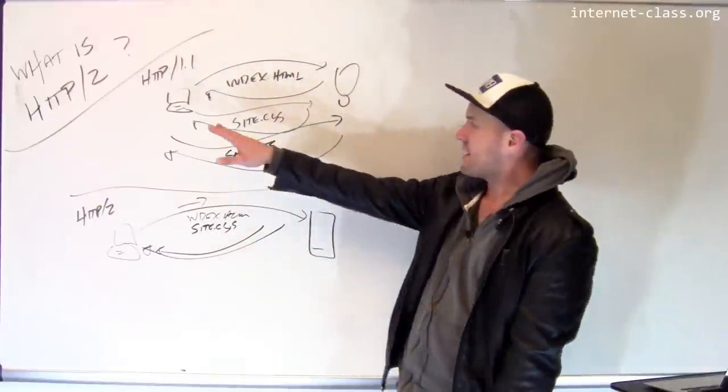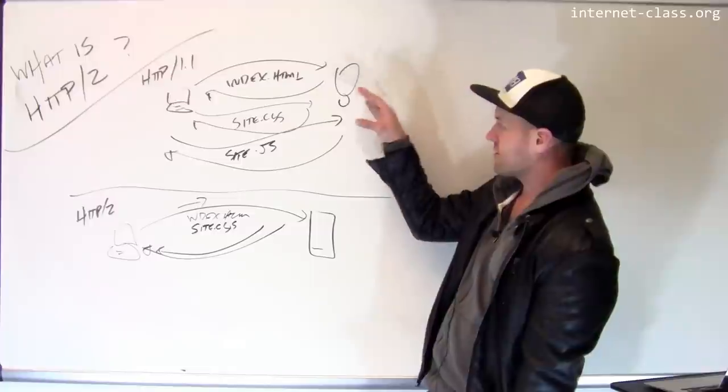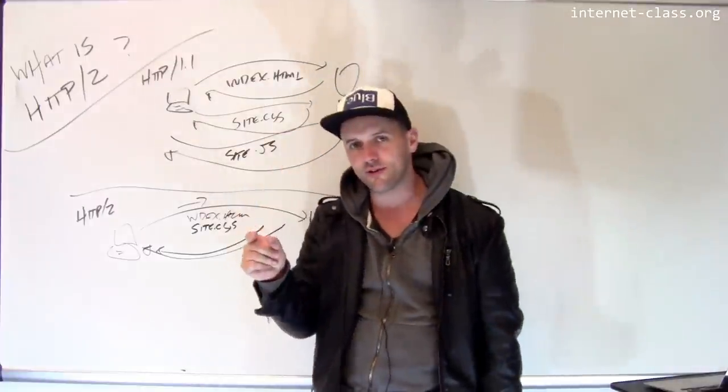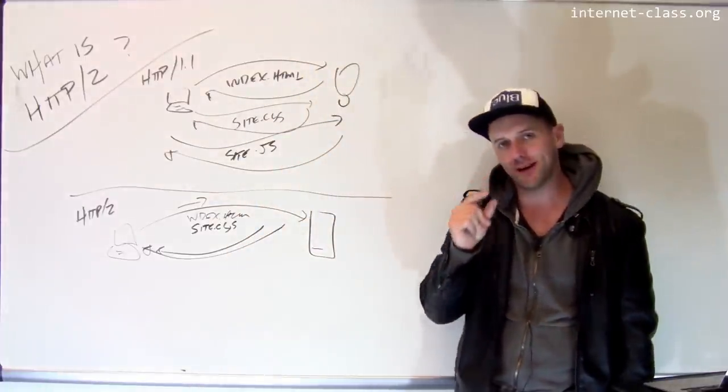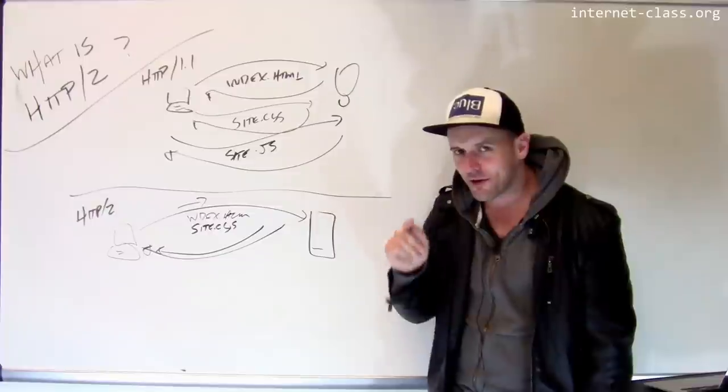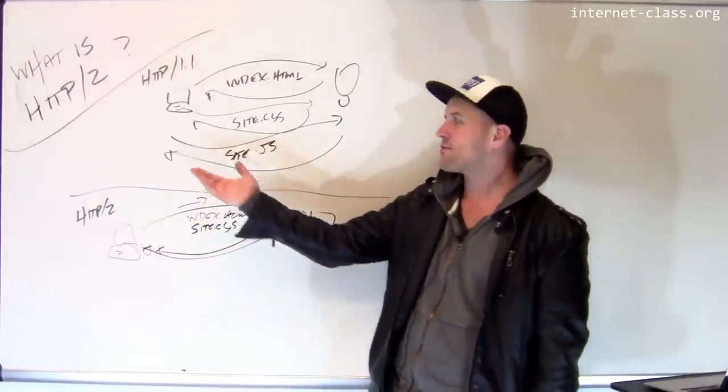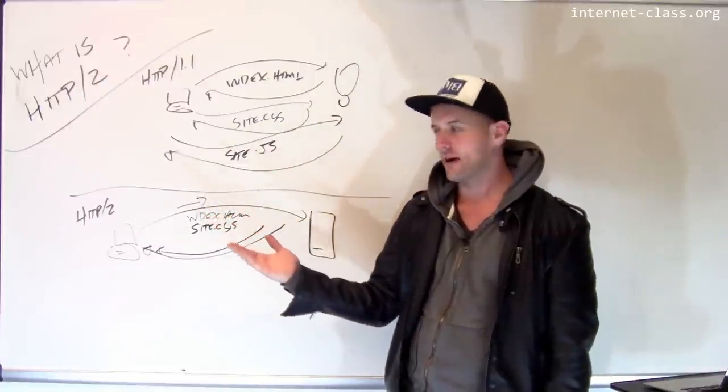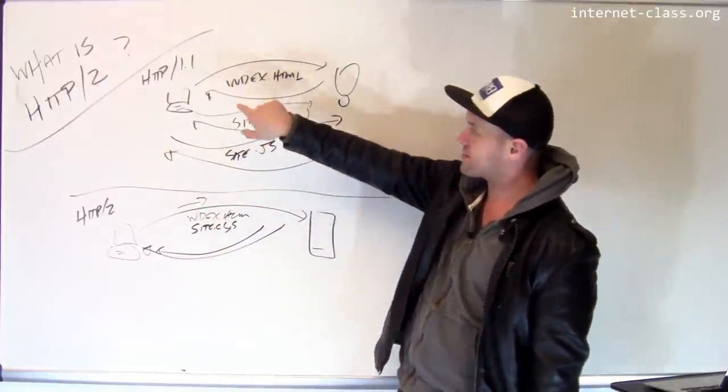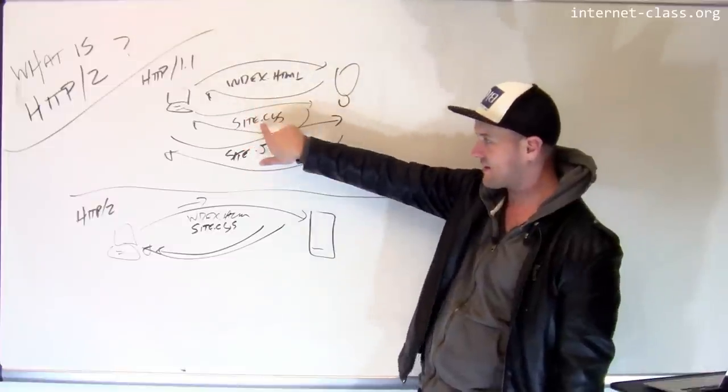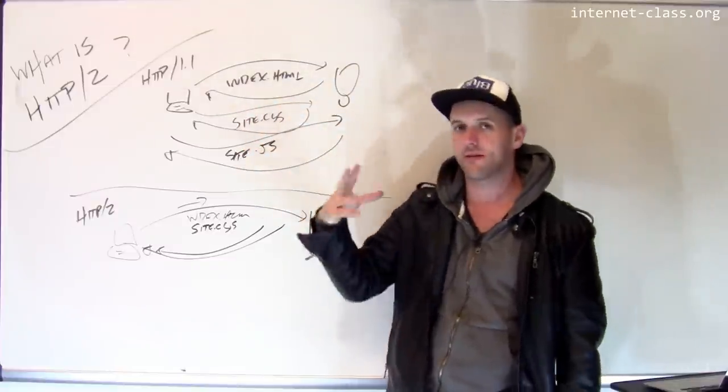Let's say I'm requesting a page from this server. When the server returns the page HTML contents, the server knows that I need these other things. So you're kind of like scratching your head. Why do I have to ask the server for all this stuff? Shouldn't the server know that in order to render this page, I also need this CSS file and this JavaScript file and some other things.